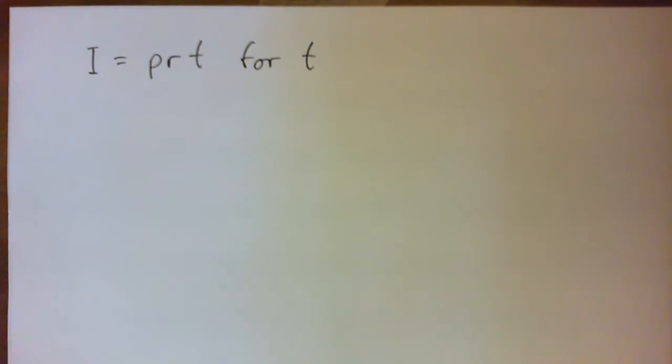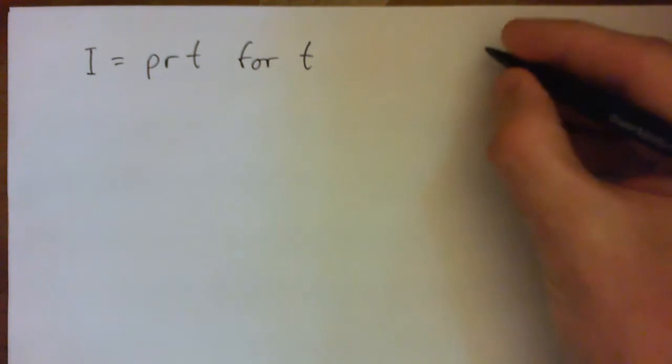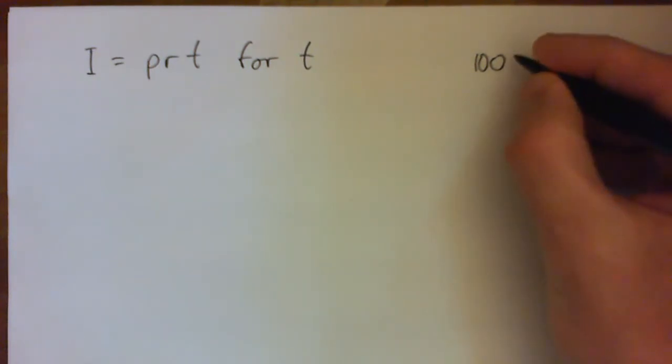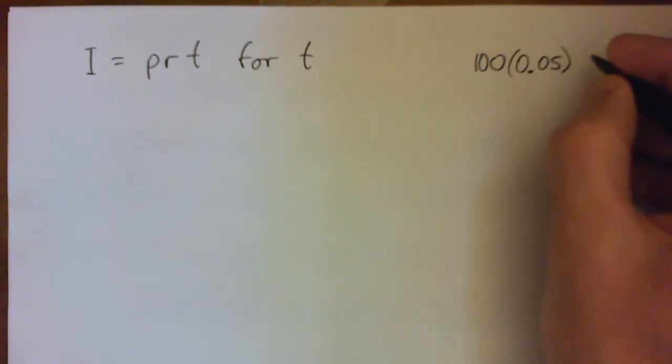Okay, so before we solve this, one way of problem solving is you take something that's difficult and put it into something easier. So I'm just going to say, imagine our principle was $100, imagine our rate was 5%, so 0.05, and imagine time was, let's say, three years.